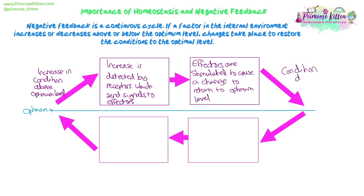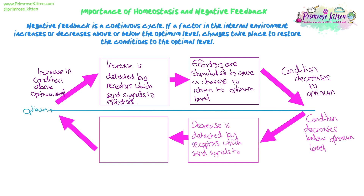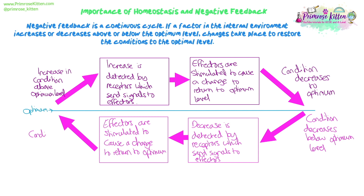The condition returns towards the optimum level and starts to decrease. That factor may then decrease past the optimum and carry on, or decrease for another reason at another time — so it decreases below the optimum. That decrease is detected by receptors, which send signals to the effector or to a coordinator which sends signals to the effector. The effectors cause a change which starts to return the factor back to the optimum. This goes up and down continuously — it is a continuous cycle to make sure the condition is maintained within acceptable limits and doesn't go too far from the optimum.